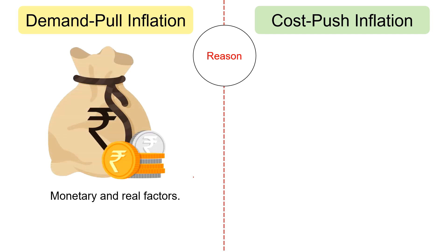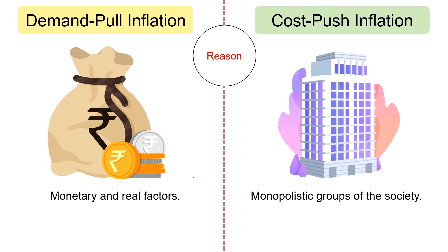Regarding reasons: demand-pull inflation is caused by monetary and real factors. Monetary factors include an increase in money supply leading to increased output. Real factors include increased government spending without change in tax revenue, fall in tax rates with no change in government spending, increase in investment, decrease in savings, increase in exports, decrease in imports, etc. On the other hand, cost-push inflation is caused by monopolistic groups through market power and price control, limited competition, supply chain control, creation of collusion and cartels, etc.